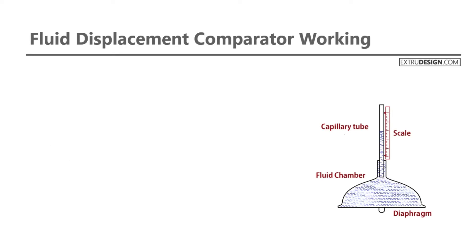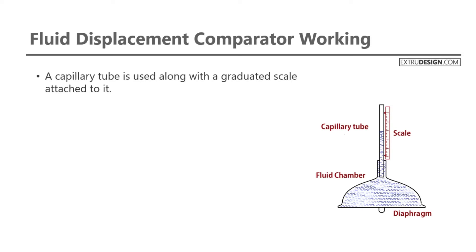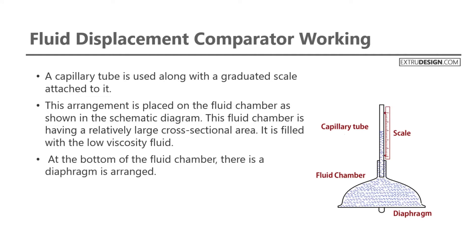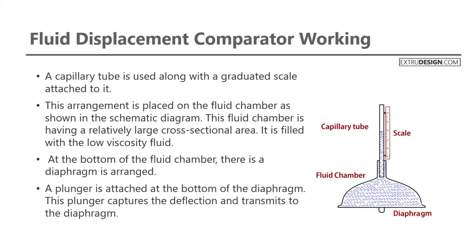Let us see how the fluid displacement comparator works. A capillary tube is used, along with a graduated scale attached to it. This arrangement is placed on the fluid chamber, as shown in the schematic diagram. This fluid chamber has a relatively large cross-sectional area and is filled with low viscosity fluid. At the bottom of the fluid chamber, there is a diaphragm, and a plunger is attached at the bottom of the diaphragm. This plunger captures the deflection and transmits it to the diaphragm.